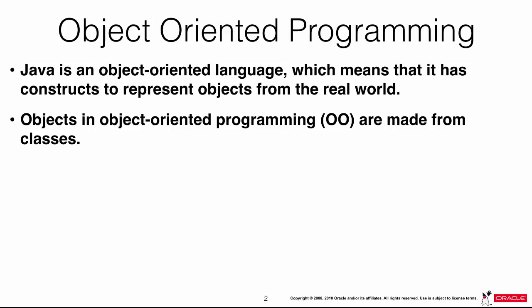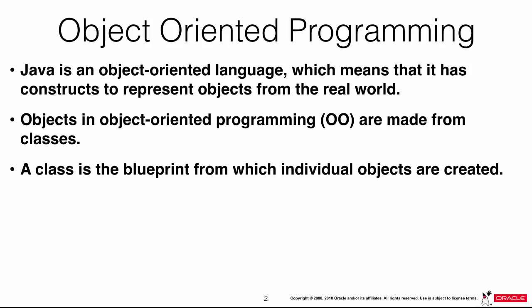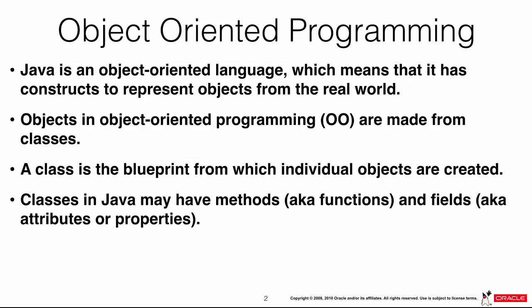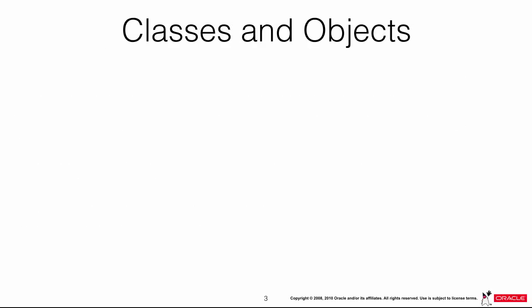In object-oriented programming, there are classes, and these classes have methods and attributes. Attributes are properties of the concept you're trying to define, and methods are functions that operate on these attributes. The class itself is a blueprint of the individual object you would like to create. Classes in Java have methods like functions and fields like attributes or properties. If you bring the class to life — if you instantiate the class — this creates an object.